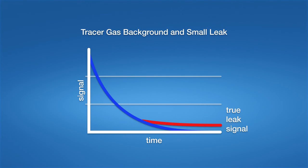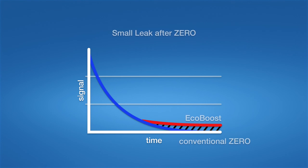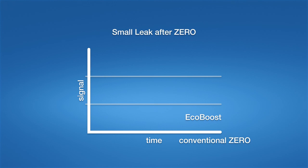All it needs to work correctly are two seconds of the decreasing blue curve. With a conventional zero function, you always need to wait a long time until the blue curve is stable enough to see small leaks.